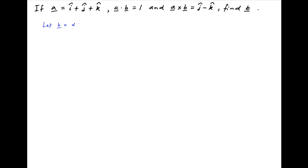Let's assume that vector b is equal to alpha times the unit vector i plus beta times the unit vector j plus gamma times the unit vector k.